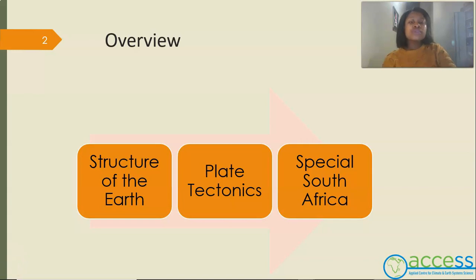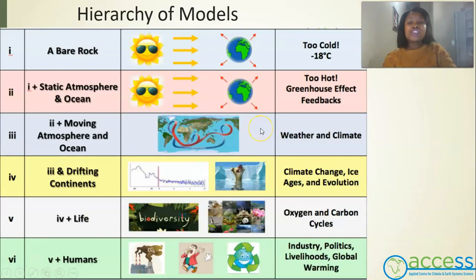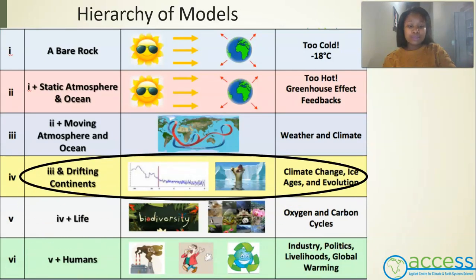What will be further discussed in this talk will help us know why this phenomenon is special in South Africa. In the hierarchy of models, our talk lies on point number 4, which consists of drifting continents, climate change, ice ages and evolution.